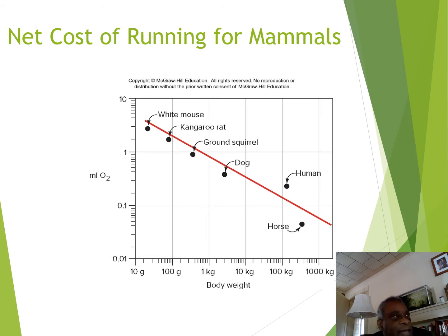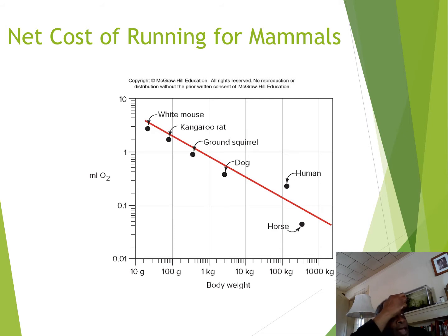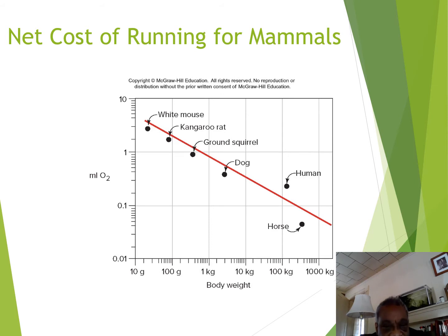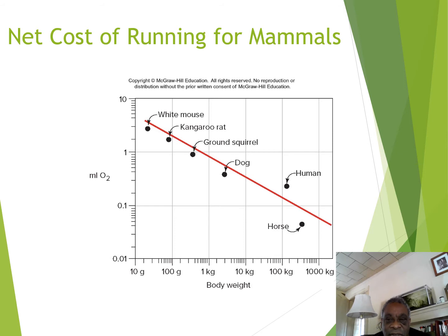If you look at the net cost of running in mammals, the larger the animal, the less energy it needs per gram to run. A white mouse, being very small, has a large surface area relative to its volume, a higher metabolic rate, and needs more oxygen. As we move from a white mouse through kangaroo rat, dog, human, to horse, each successive animal is larger and needs less oxygen relative to its body size — a much more efficient way of running respiration.